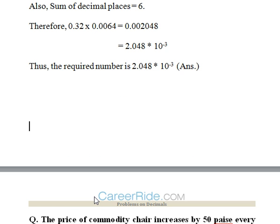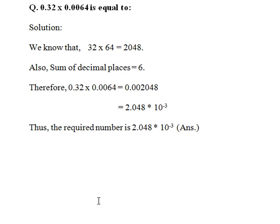Now, 0.32 × 0.0064 is equal to what? We'll simply multiply 32 by 64 and we'll count the number of decimals.